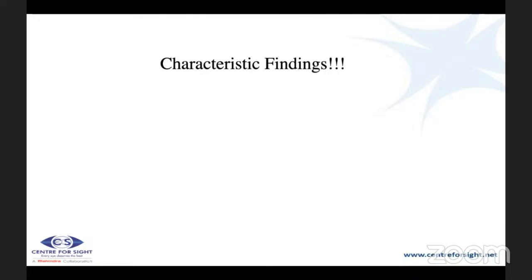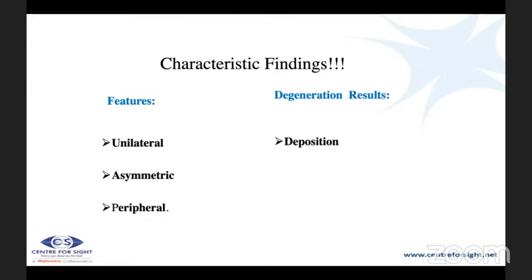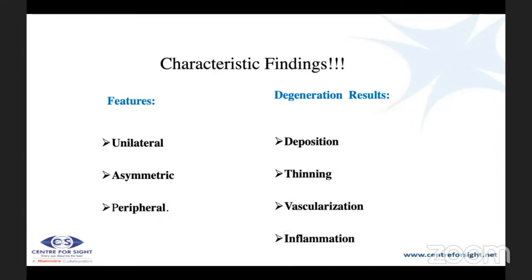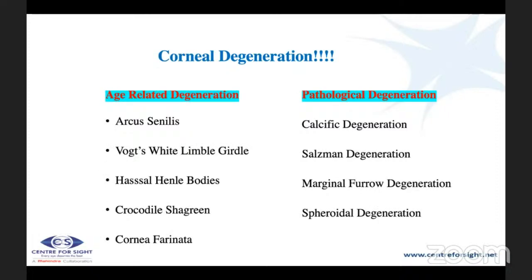In today's talk, we're going to focus on degeneration versus dystrophy, how to differentiate clinically, what constitutes normal aging of the cornea, making a spot diagnosis for residents, the telltale signs of various degenerations, systemic history, tailored investigations, and management. Corneal and conjunctival degeneration refers to conditions in which normal corneal and conjunctival cells undergo degenerative changes under the influence of age or pathology. Characteristic findings are usually unilateral, asymmetric, and peripheral, resulting in deposition, thinning, vascularization, and sometimes inflammation.